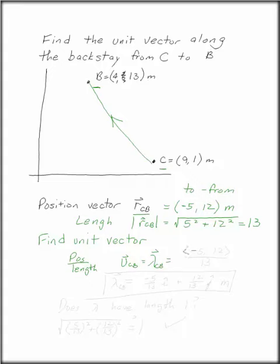Or in this case, (-5, 12) divided by 13. We can write that again as -5/13 i plus 12/13 j. This is our unit vector.